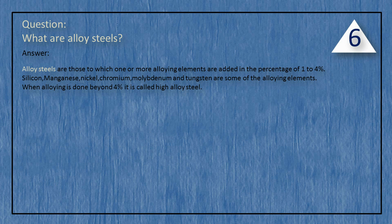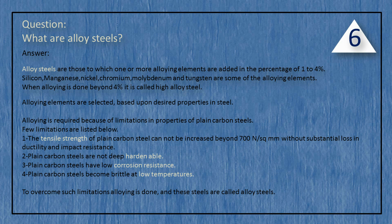What are alloy steels? Alloy steels are those to which one or more alloying elements are added in the percentage of 1 to 4%. Silicon, manganese, nickel, chromium, molybdenum, and tungsten are some of the alloying elements. When alloying is done beyond 4%, it is called high alloy steel. Alloying elements are selected based upon desired properties in the steel. Alloying is required because of limitations in properties of plain carbon steels. The tensile strength of plain carbon steel cannot be increased beyond 700 N/mm² without substantial loss in ductility and impact resistance. Plain carbon steels are not deep hardenable, have low corrosion resistance, and become brittle at low temperatures. To overcome such limitations, alloying is done and these steels are called alloy steels.